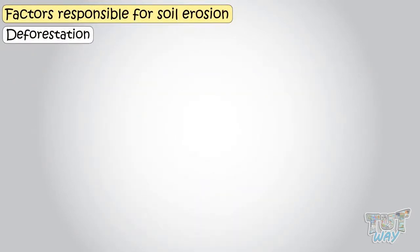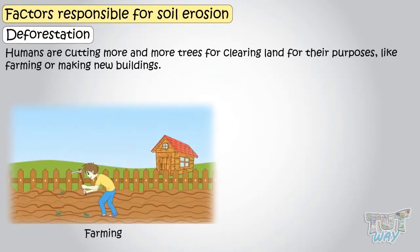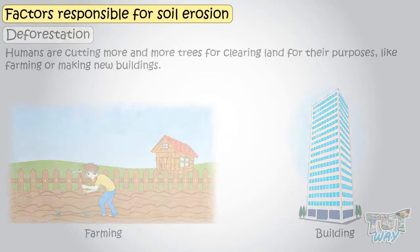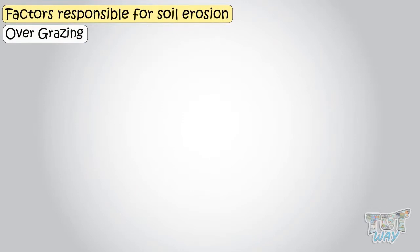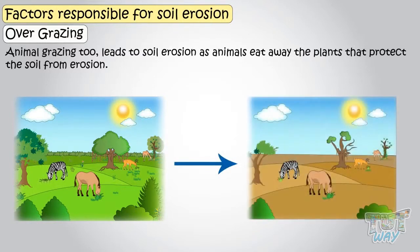Deforestation: humans are cutting more and more trees for clearing land for purposes like farming or making new buildings. Overgrazing: animals grazing also leads to soil erosion, as animals eat away the plants that protect soil from erosion.